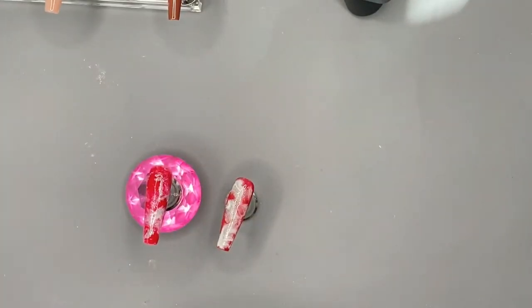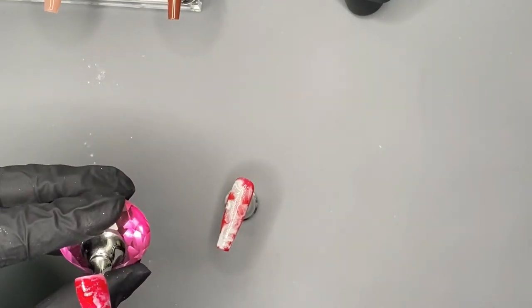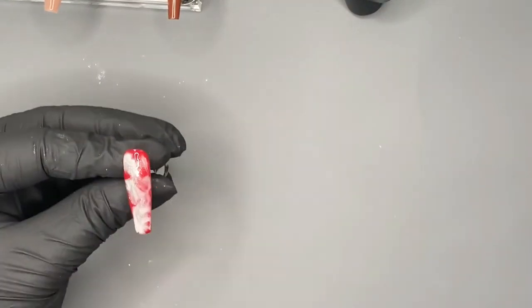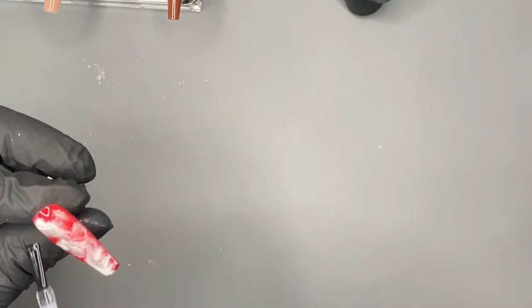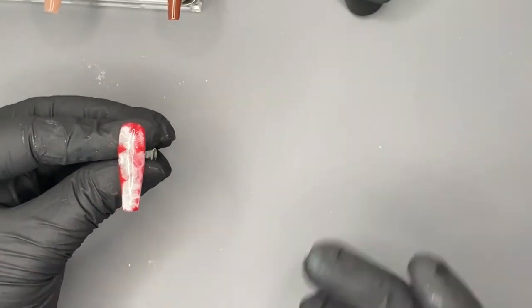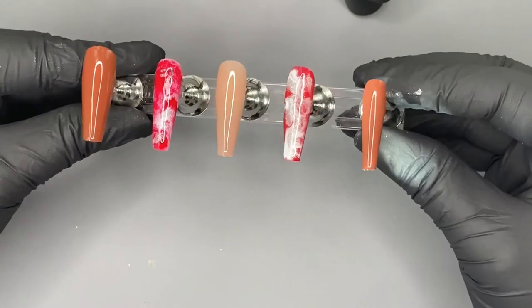Now we're going in with the no-wipe top coat from Nail Addict and we're just going to top coat these two nails. As you can see, that's the white and that's the red. I'm just going to do a quick top coat and cure for 30 seconds, just make sure everything's there, it's nicely coated and pretty.